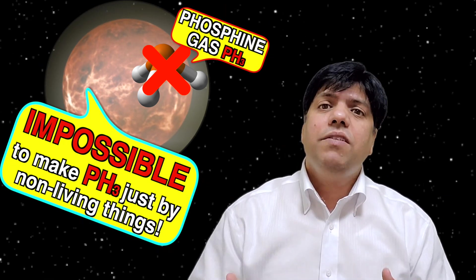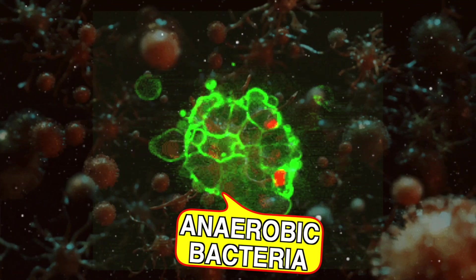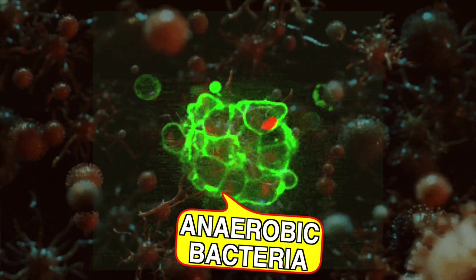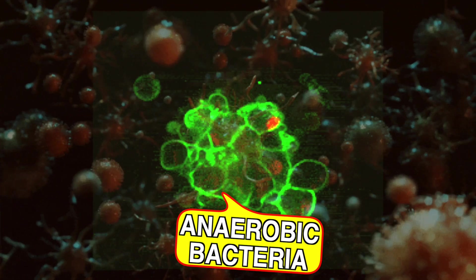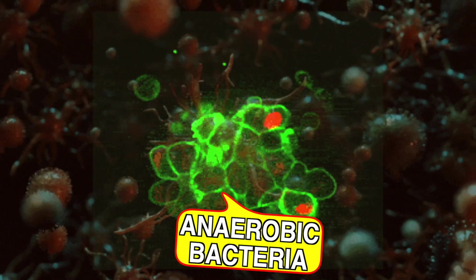So it needs life forms such as anaerobic bacteria. So probably this phosphine gas emanating out of the clouds of Venus are a result of some kind of anaerobic bacteria